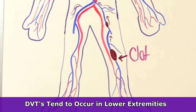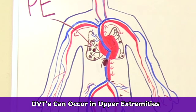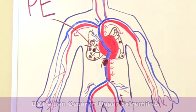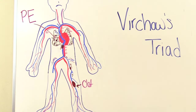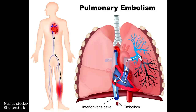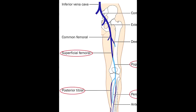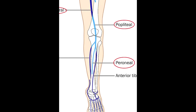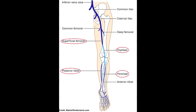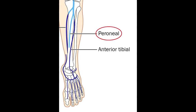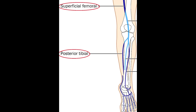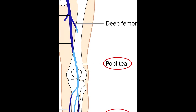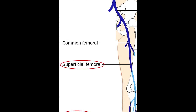DVTs tend to occur in the lower extremities like the legs, but they can occur in the upper extremities as well. However, when they occur in the lower extremities, they tend to have a higher chance of breaking off and turning into a pulmonary embolism. So what veins are most susceptible for a DVT? Well, this includes the veins of the pelvic area, the lower leg like the calf, and the thighs. The specific veins are the peroneal and the posterior tibial in the calf, and the popliteal and the superficial femoral in the thighs.